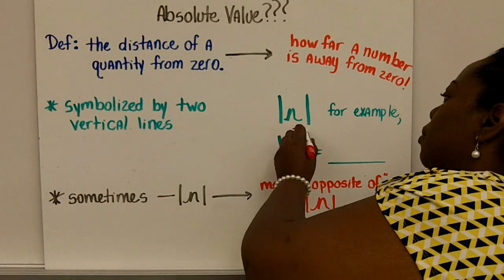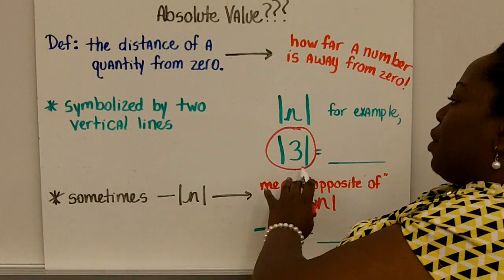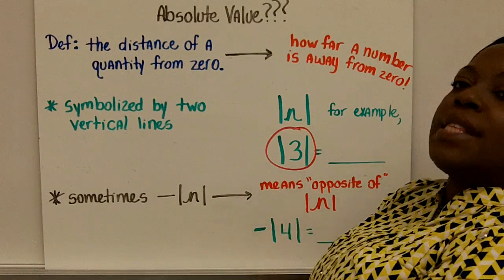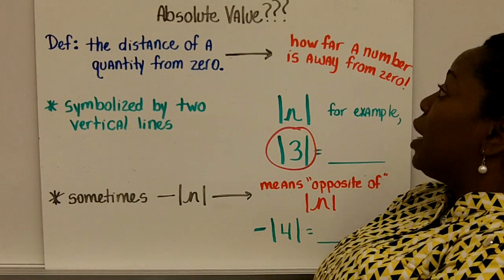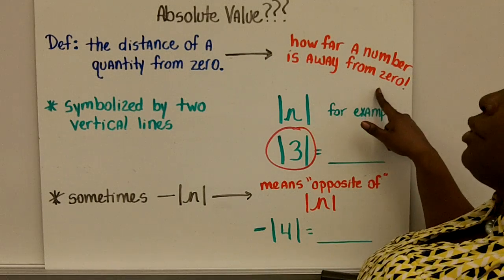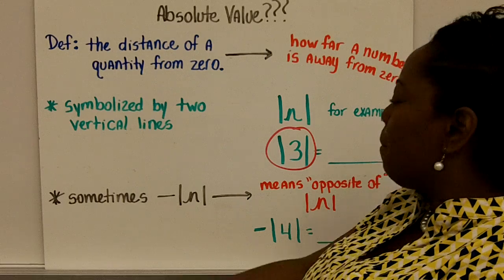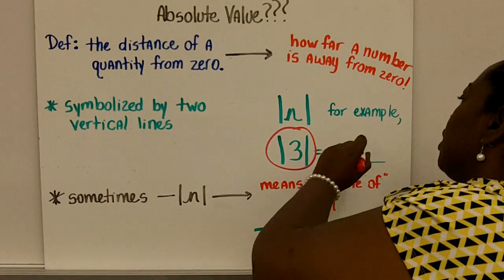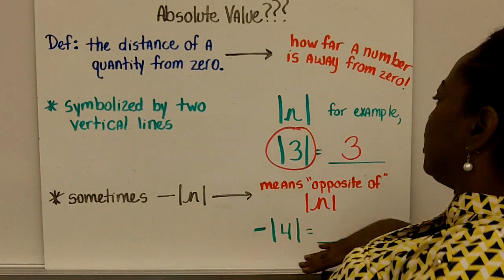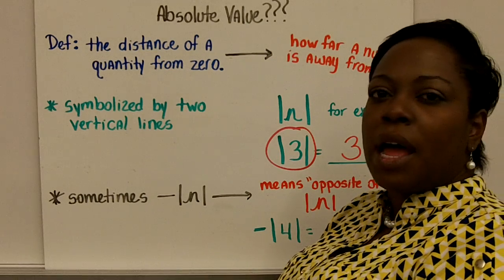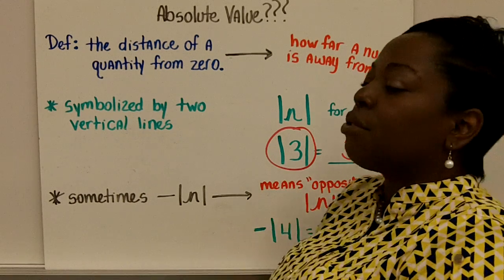So for example, if I gave you a problem that looked like this, we have three with straight bars around it, I'm asking you what is the absolute value of three. In other words, how far is three away from zero on the number line? Well, if you remember the previous example, positive three was three places away from zero on the number line. Therefore, the absolute value of three is three.